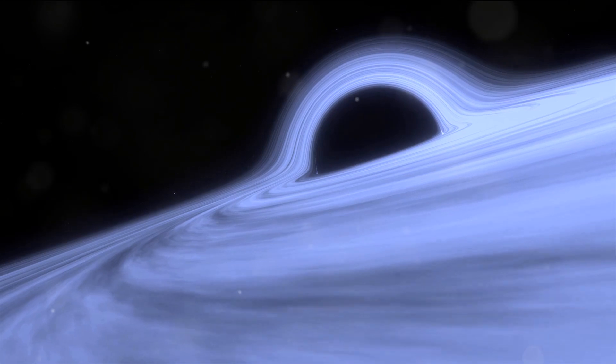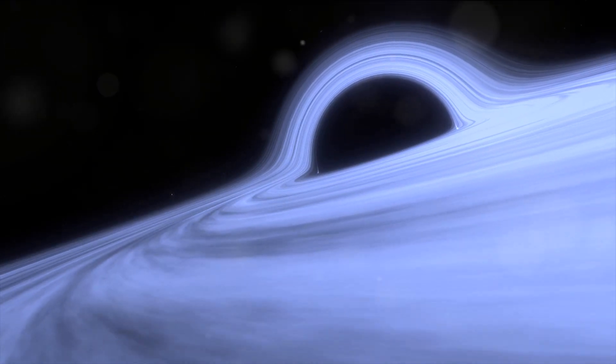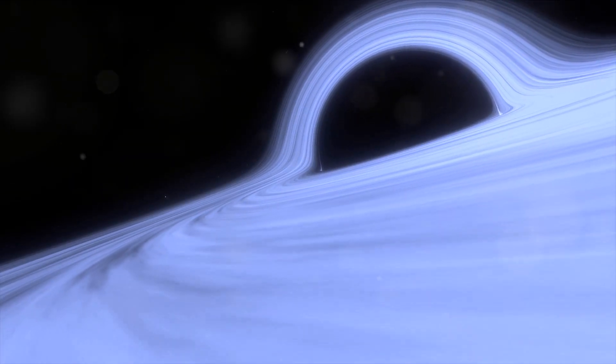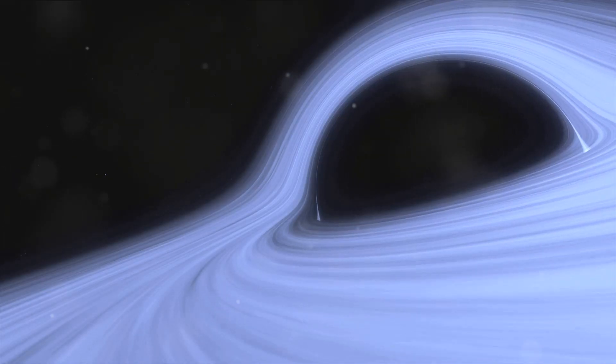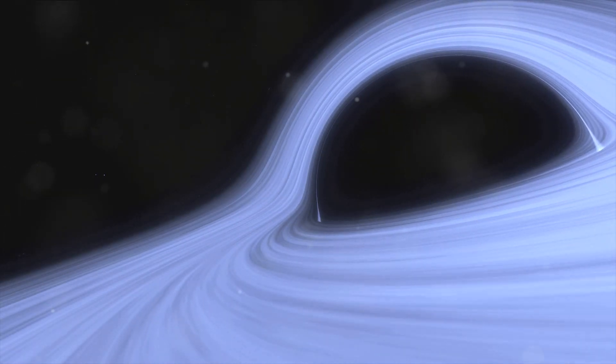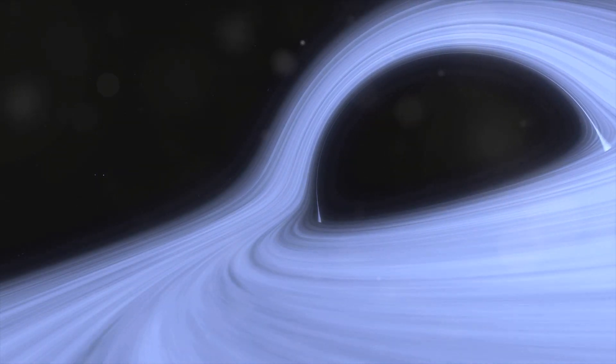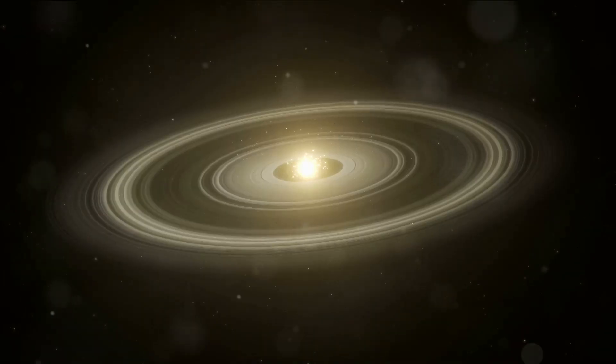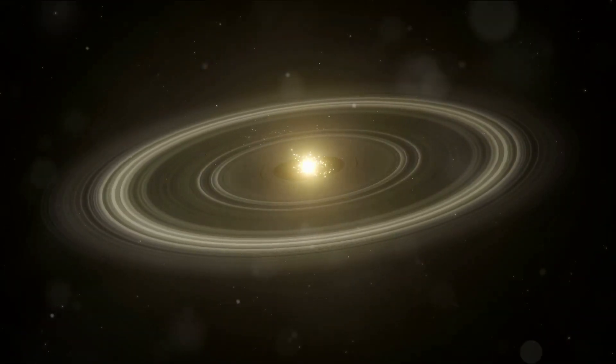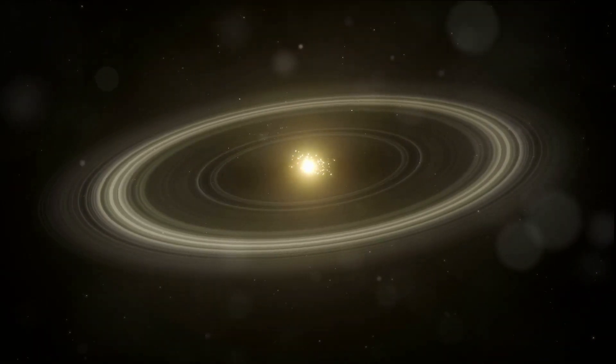It's important to understand what accretion and accretion disk are. Accretion is a fascinating process where dust and gas combine under the influence of gravity to form larger bodies. Imagine a grand cosmic dance, where particles whirl and twirl, gradually drawing closer and closer. This dance takes place on the stage of the accretion disk, a flat spinning disk of dust and gas.